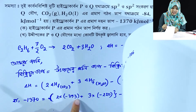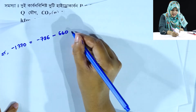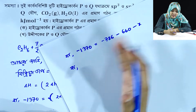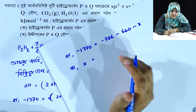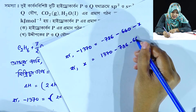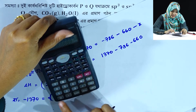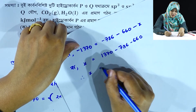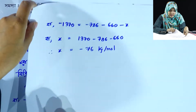So we will do minus 3 into 220 — that is 660. Minus x. So: x is equal to minus 370, which equals minus 786 minus 660. 370 minus 786 minus 660 is equal to minus 76. And x is equal to minus 76 kJ per mol.